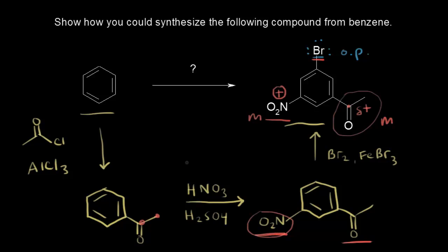Our synthesis is complete. We start with a Friedel-Crafts acylation. The acyl group is a meta-director, which directs the nitro group to the meta position. Then with two meta-directors, we brominate, which directs the bromine to the final position.